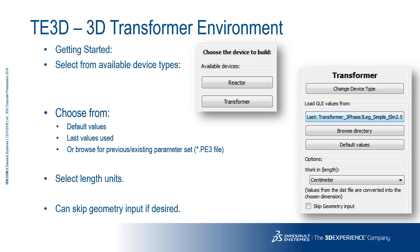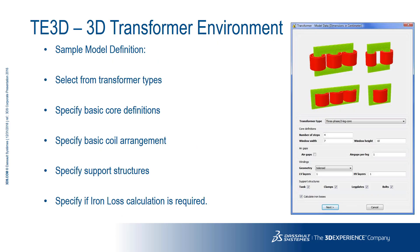The transformer environment is launched from the standard 3D Opera GUI. First you select whether you want a transformer or a reactor. If you've already defined a transformer and want to continue working with it, you have the option to pick up the geometry from an existing file; otherwise, you can generate the geometry afresh automatically. Several standard configurations are available. After selecting one, you can provide basic topological information and choose whether to include details such as air gaps, the tank, clamps, leg plates, and bolts. The more details you add, the greater the number and types of results you can extract, but probably at the cost of more elements and longer run times.